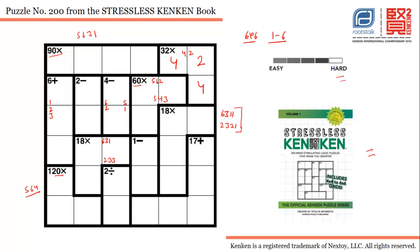So these are the two options we have for the 18x cage. If you observe closely, this option has two ones and this option has two threes. If we use the first option, one has to be there; if we use the second option, three has to be there. If we use one here, the answer for these three cells will be six, three, one, and if we use three, the answer has to be two, three, one.